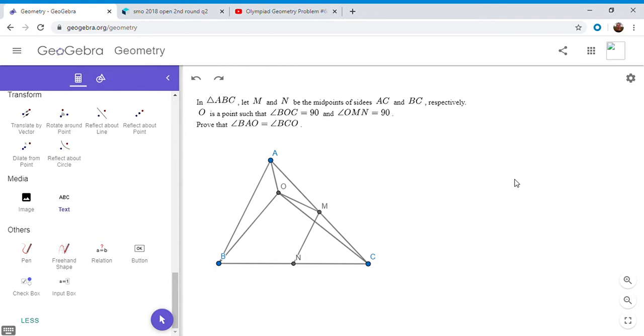O is a point such that angle BOC is 90 degrees, and angle OMN is 90 degrees. And given those two facts, we want to show that angle BAO is equal to angle BCO.